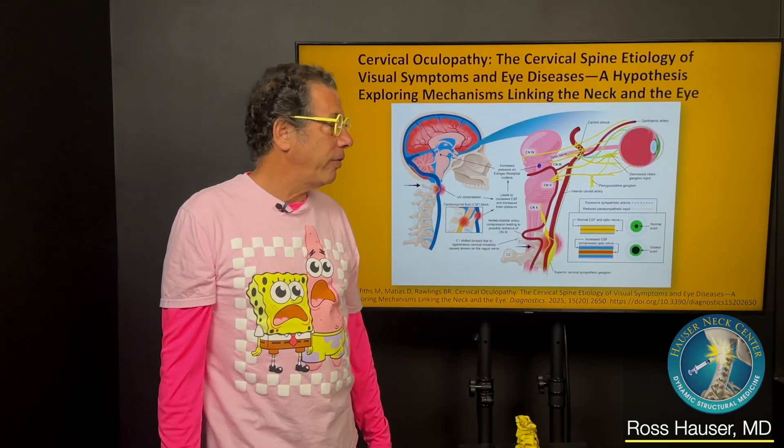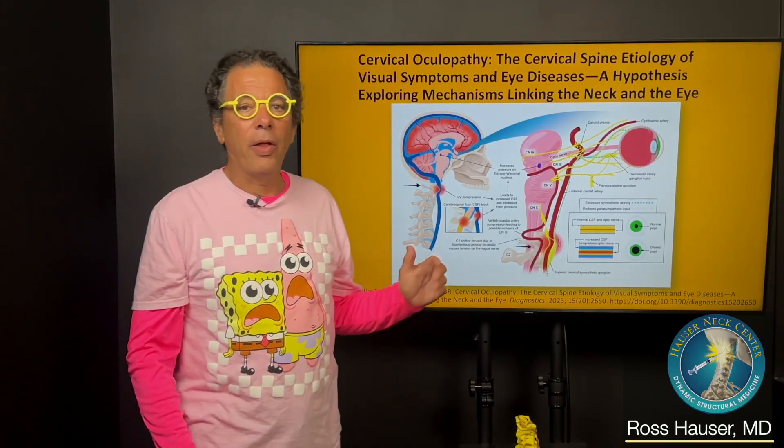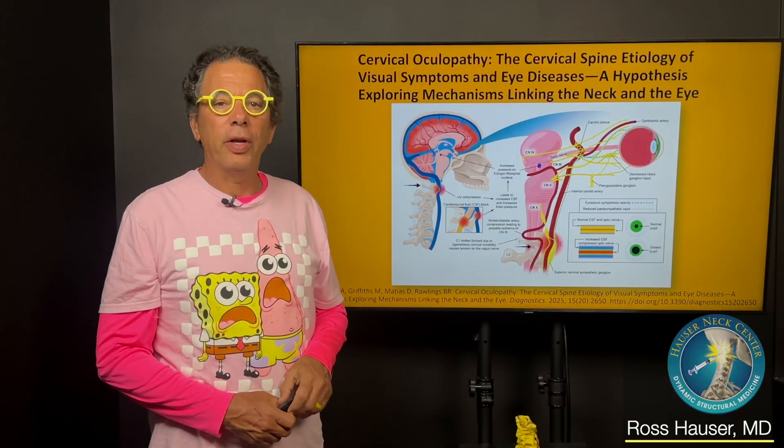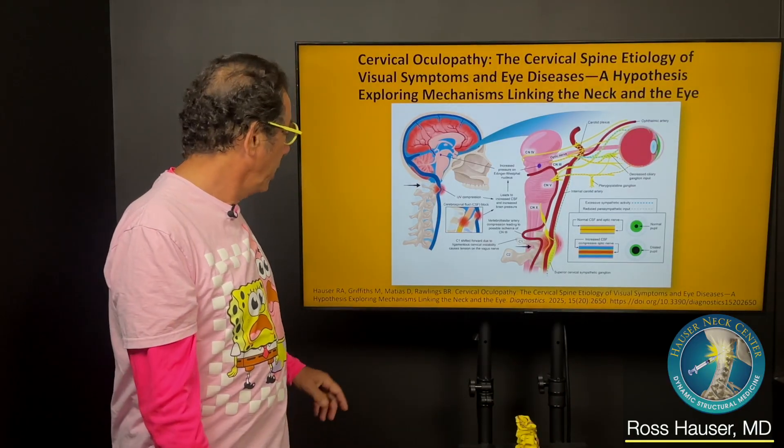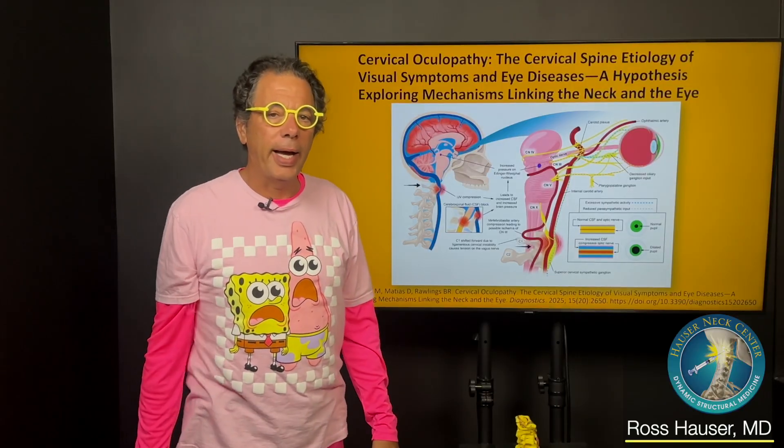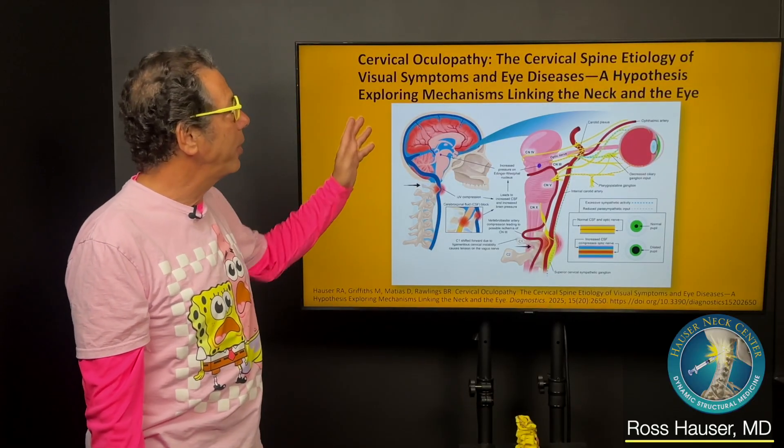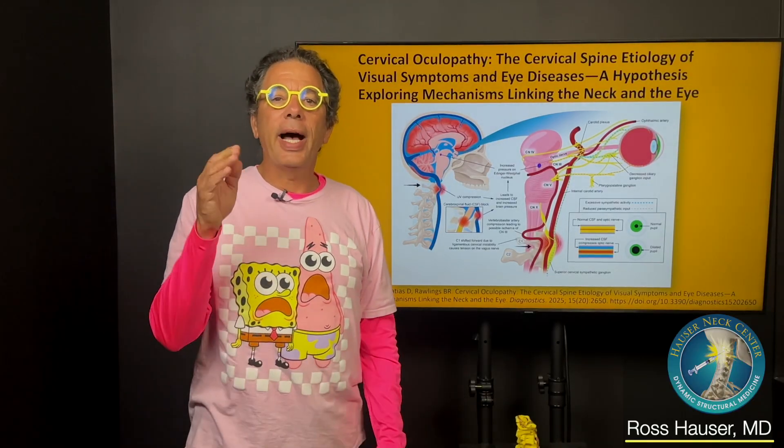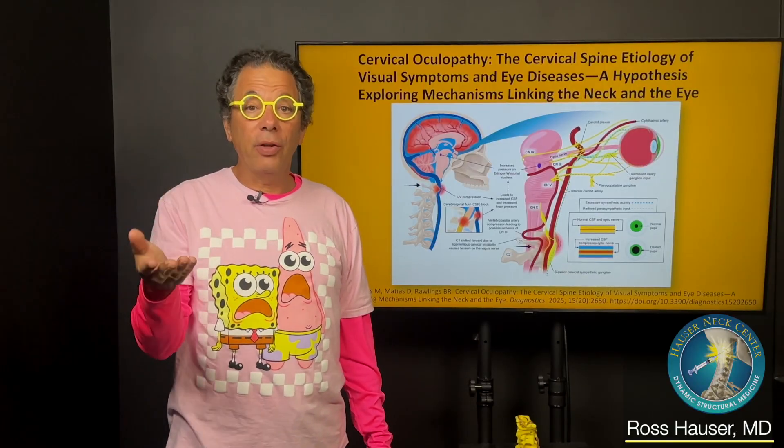Happy to report that the office here, myself included, got another article in the scientific literature just published. So it's called cervical oculopathy. So that's a term that I described. I came up with that term. It's basically oculopathy - ocular is eye, pathy is pathology. So it's eye diseases that have a cervicogenic or cervical etiology.